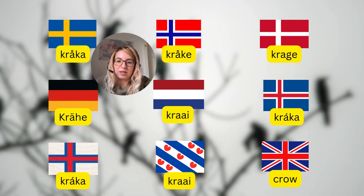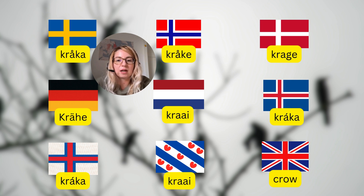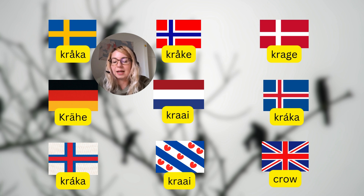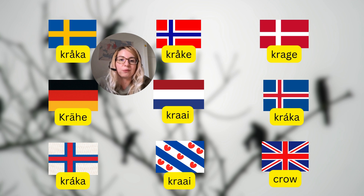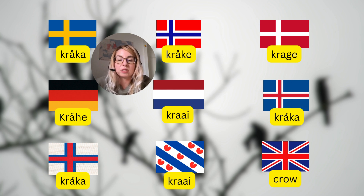Crow is a pretty straightforward one: 'kråka' in Swedish and Norwegian, 'kå' in Danish, 'Krähe' in German, 'kraai' in Dutch, 'kráka' in Icelandic. It definitely stems from 'corvus' in Latin, generally defining the whole family Corvidae, ravens included. The Proto-Indo-European root here would be 'to croak', essentially imitating the harsh sounds these birds make — they are the most intelligent birds of all, actually.